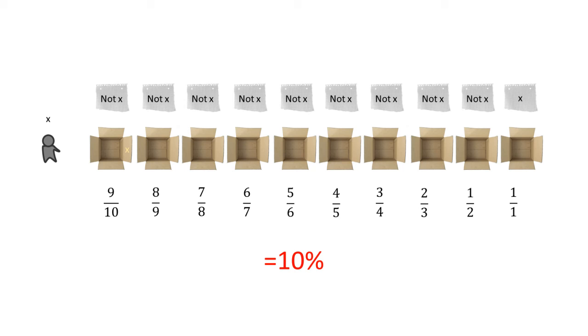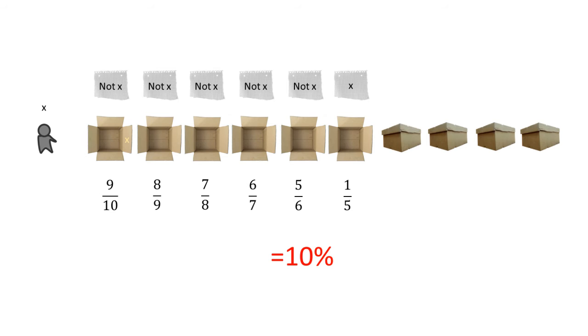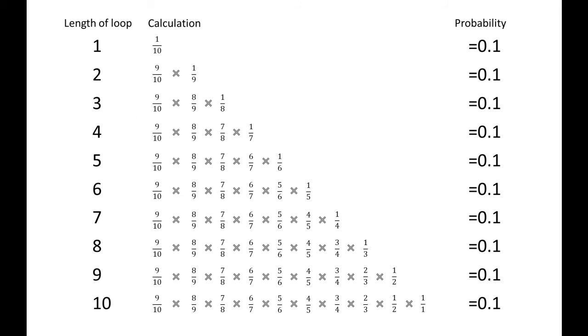But what about loop sizes in the middle? Well, let's look at 6. And it's still 10%. This is the probability that the first 5 boxes don't contain the number of the prisoner, but the 6th one does. In fact, they are all 10%. Therefore, the chances that the loop is greater than 5 is not 69%, it's 50%, at least according to these calculations.